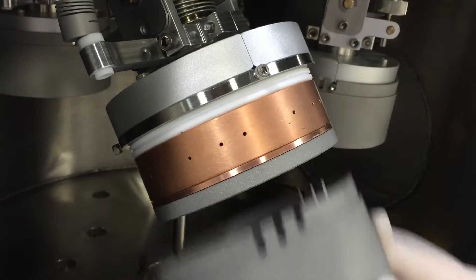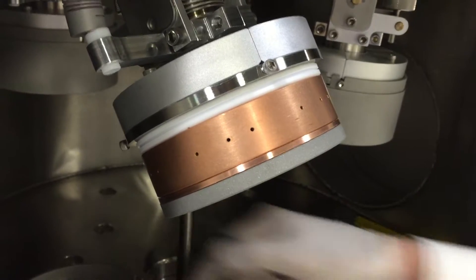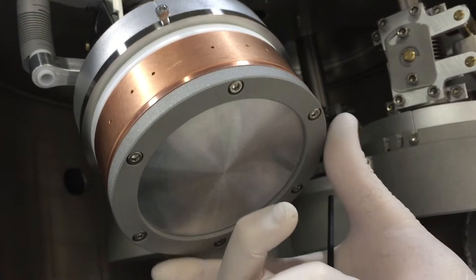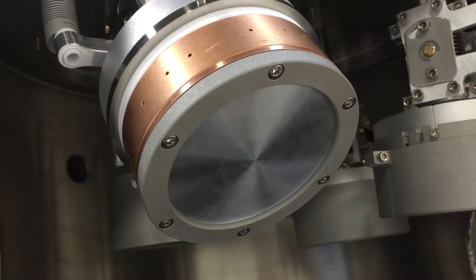Slide off the outer shroud assembly. There are six screws on the face of the target retainer that need to be removed in order to access the target.